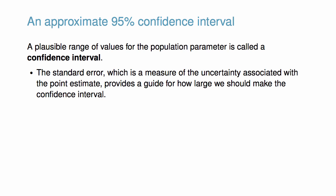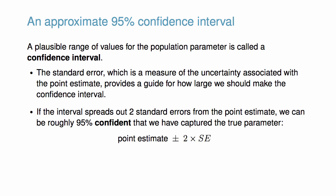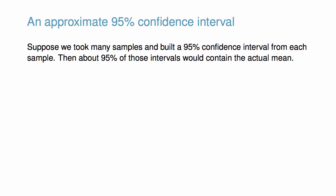The standard error represents the standard deviation associated with the estimate. If the interval spreads out two standard errors from the point estimate, we can be roughly 95% confident that we have captured the true parameter value. But what does 95% confident mean? Suppose we took many samples and built a 95% confidence interval from each sample. Then about 95% of those intervals would contain the actual mean.